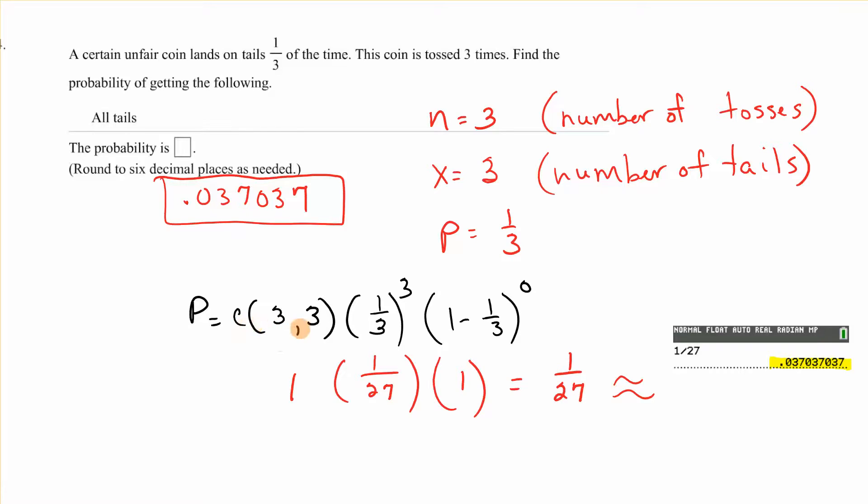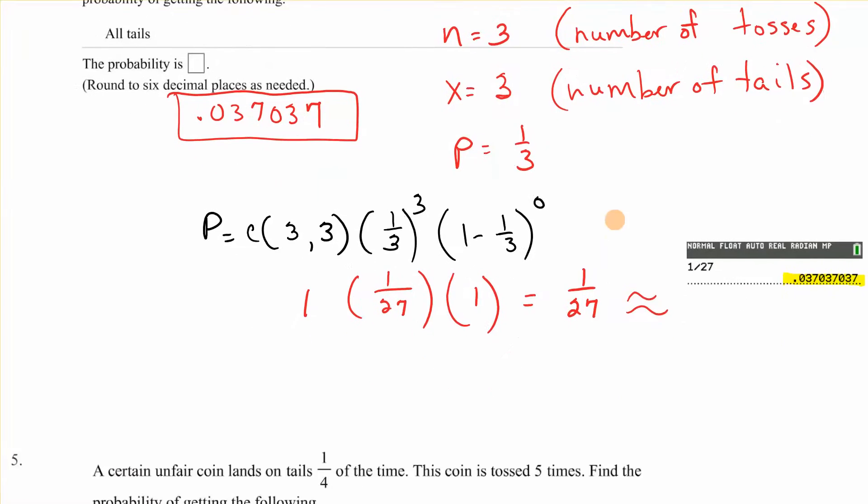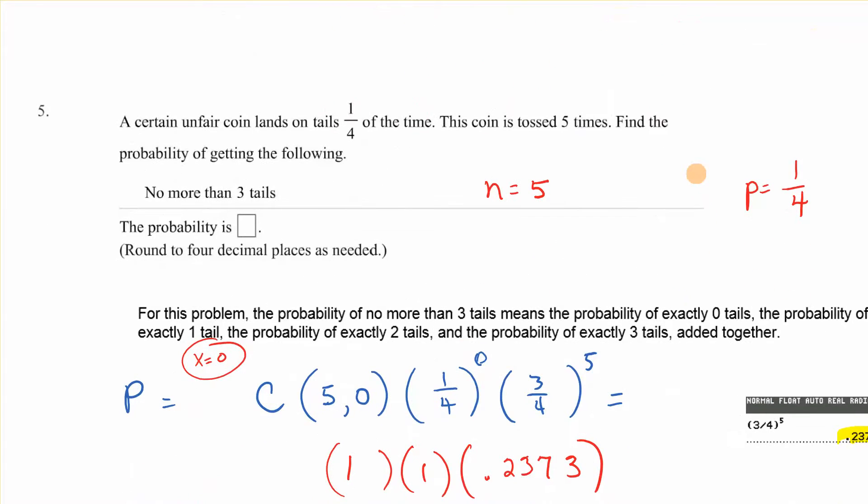Times 1 minus 1 third to the 3 minus 3 which is 0. 1 times 1/27 times 1, and you get that. You can do it this way, you can do it on the decimal. Since it wants 6 decimal places, just divide 1 by 27, or you may have gotten decimal if you were using the calculator.